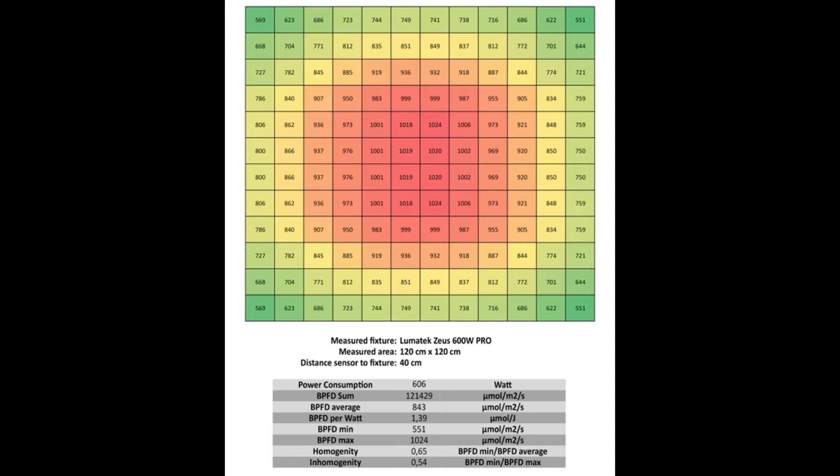Here we have the light plot of the Lumotech SUSE 600 Watt Pro in the 120 x 120 cm tent, measured at a distance of 40 cm from the lamp to the sensor. The power consumption was 606 watts. The PPFD sum is 121,429 micromole per square meter per second. The PPFD average is 843. The PPFD per watt is 1.39.